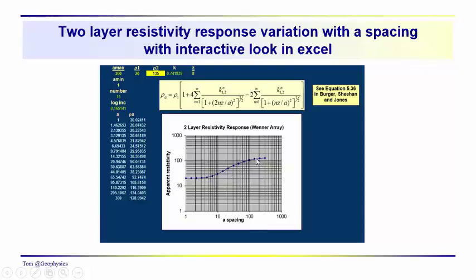We can see that there's at least two layers here. We can see a near surface layer with a resistivity that is about 20. And actually we have the numbers up here. And we can see that we have a deeper layer with a resistivity of 135.